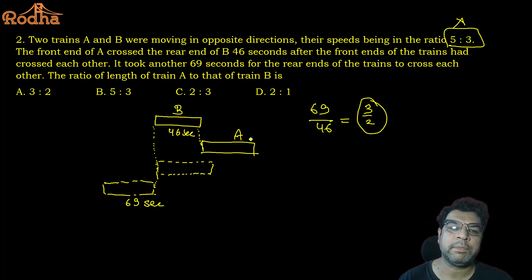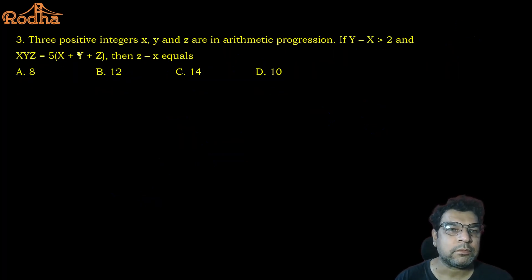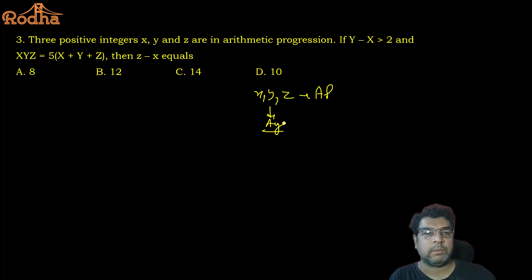Third question and the last question. Three positive integers x, y, and z. I think this is CAT 2022 if I'm not wrong. Three positive integers x, y, z are in arithmetic progression. If y minus x is more than 2 and xyz equals 5 times x plus y plus z, then z minus x equals... Now this question can be solved without doing much effort. Think logically. Whenever three numbers are in AP, their sum is equal to three times their average. And whenever three numbers are in AP, their average is always the middle number, which is true for any odd number of numbers which are in AP.